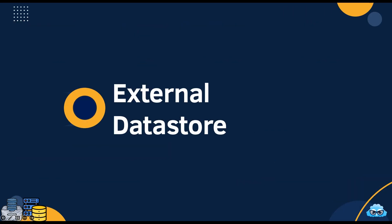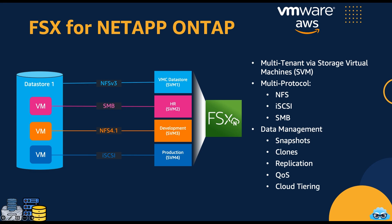Moving on, let's explore the external datastore options available within VMware Cloud on AWS. Amazon FSx for NetApp OnTap is a powerful storage solution native to AWS. It seamlessly integrates into your AWS environment, creating multi-tenant storage virtual machines in your AWS account. It's versatile, supporting multiple protocols including NFS (network file system), SMB (server message block), and iSCSI. This flexibility caters to a wide range of storage scenarios, empowering you to harness the capabilities of NetApp OnTap within your AWS account, providing a robust and adaptable storage solution.